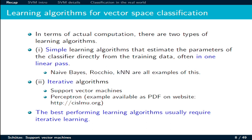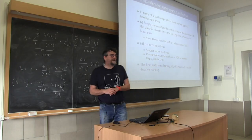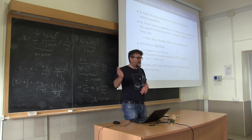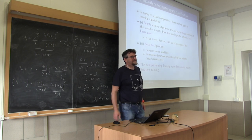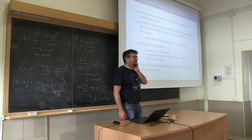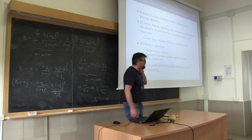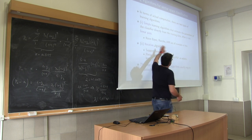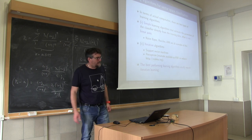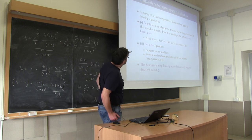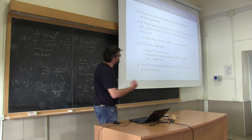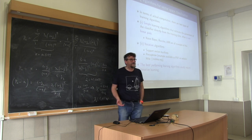In general, we can classify two main types of learning algorithms. A simple learning algorithm in which you have a linear pass, namely you observe once all the elements in the training set, often in one single pass, and come up with this plane. These are the learning algorithms for vector space classification. The examples we saw are Naive Bayes, Rocchio, and KNN.